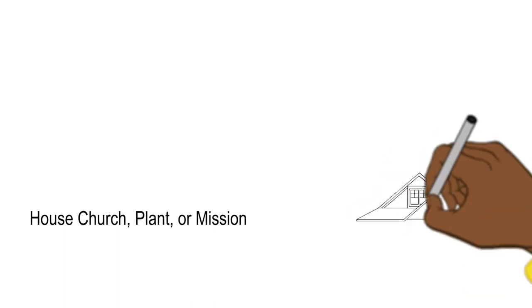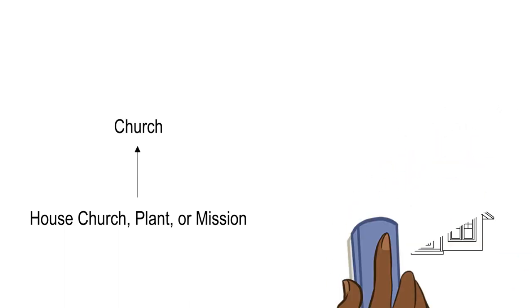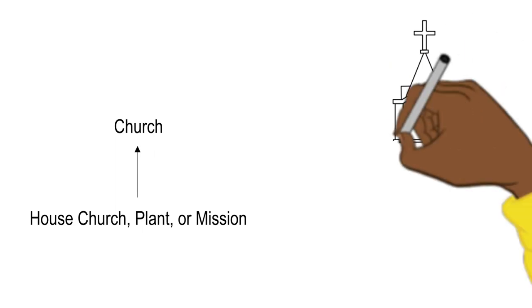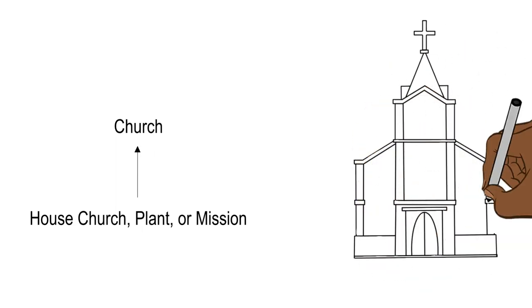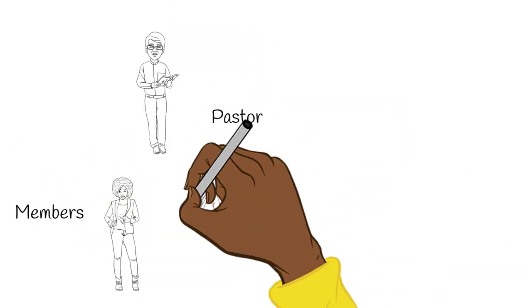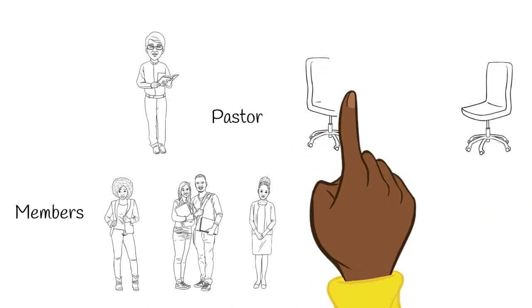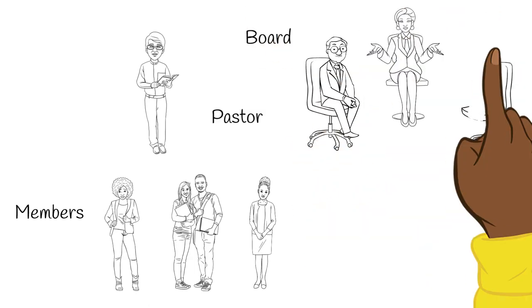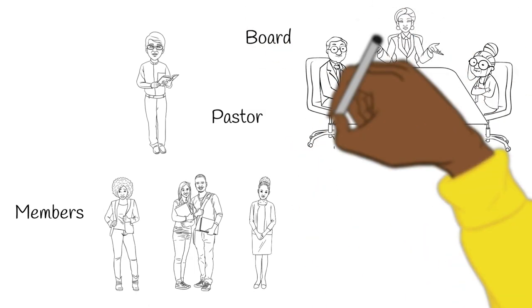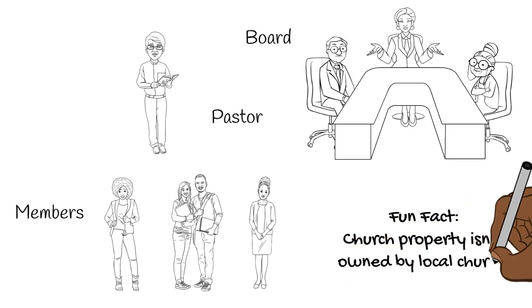Whenever a house church, church plant, or a mission becomes self-sustainable enough to become a church, it joins this first tier and gets a participation trophy. At the local church level, leadership decisions are guided by a pastor or lay leader on behalf of his or her members, and it has a board of elected members who ultimately decide its direction. Fun fact: the local church's property isn't actually owned by the local church — it's owned by the next tier up, the conference.